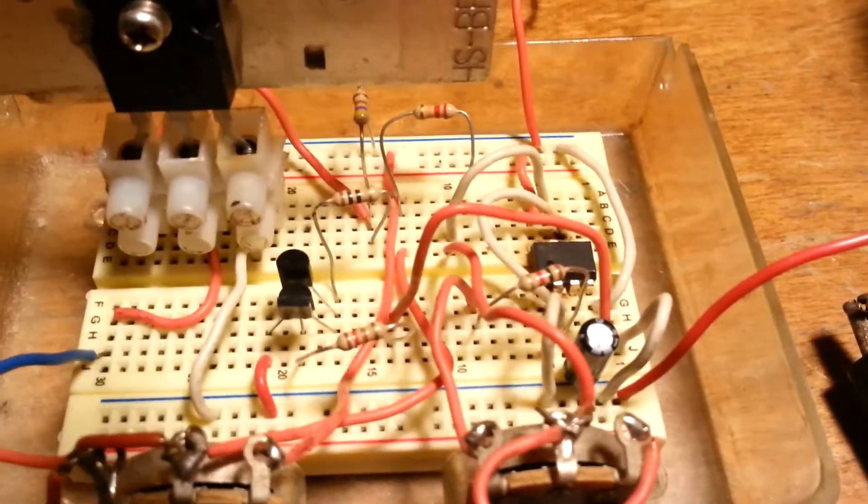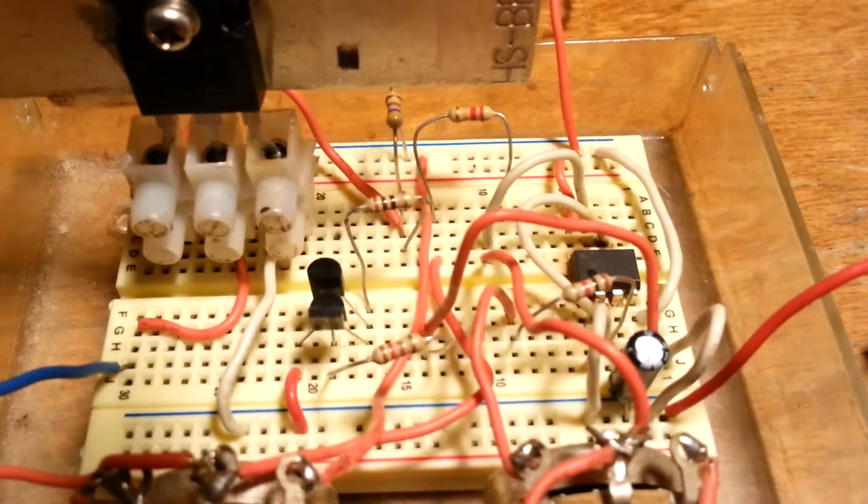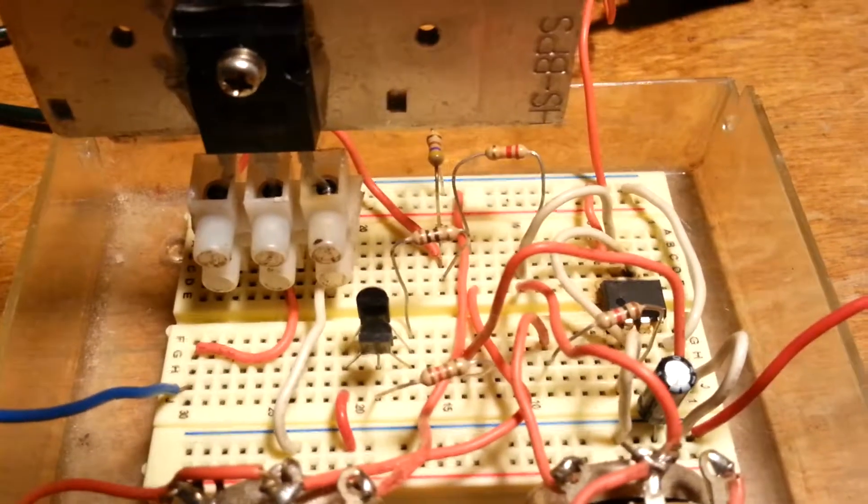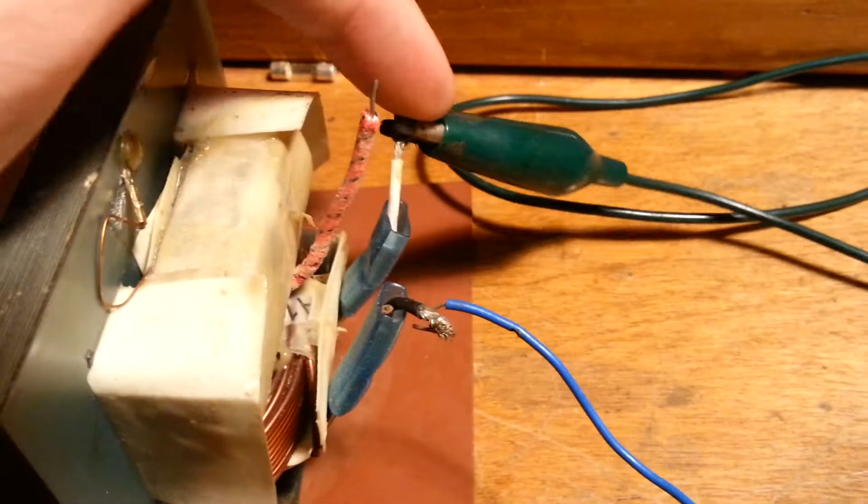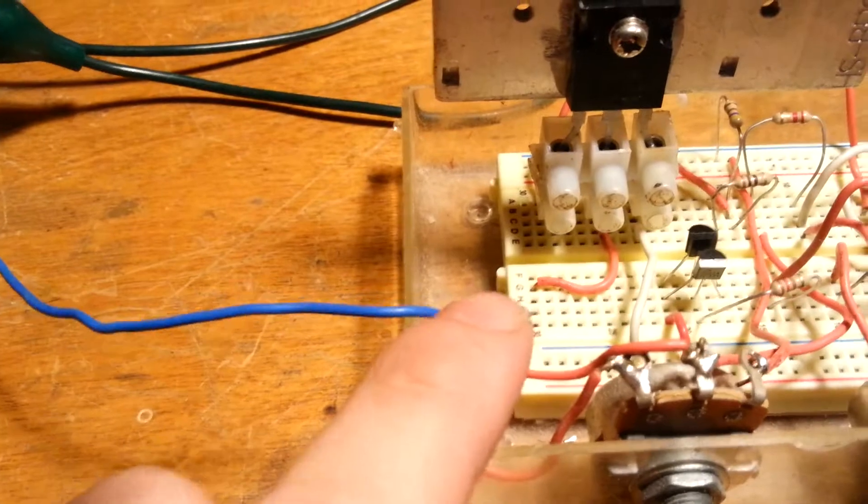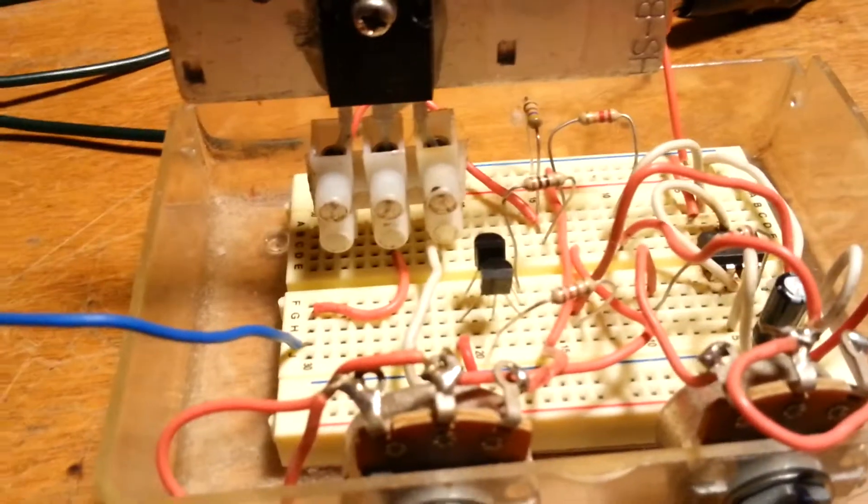I'm not quite sure of the frequency but I want to say it's about 50 maybe 60 hertz. Got the positive of my battery coming around connecting to one side of the microwave transformer. The other side of it is connected to the collector pin of the MOSFET.